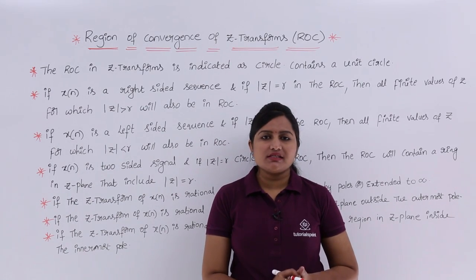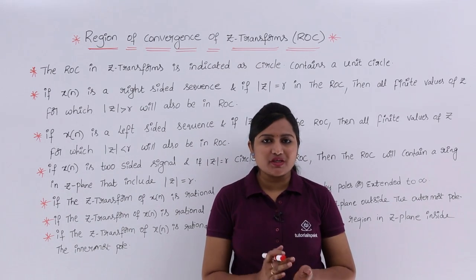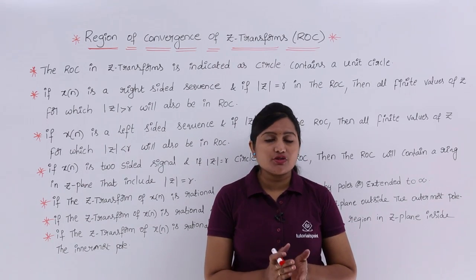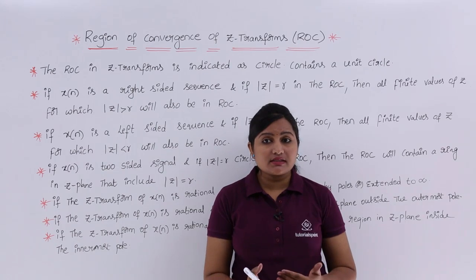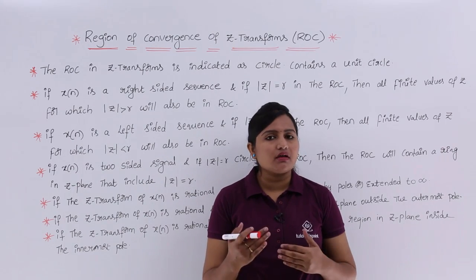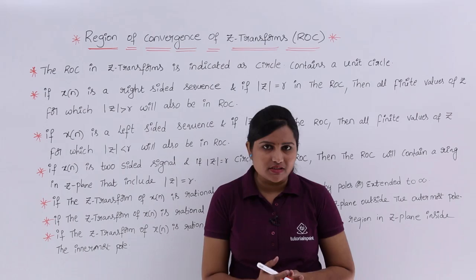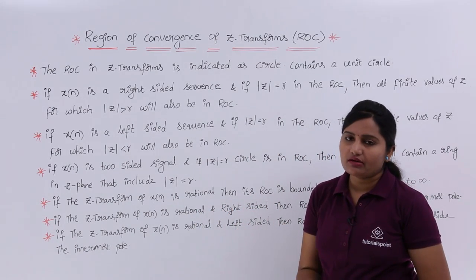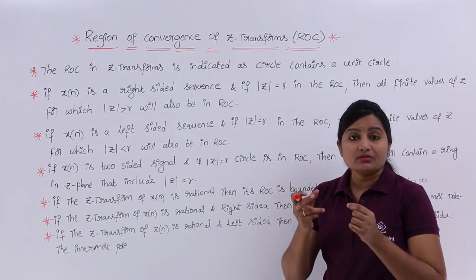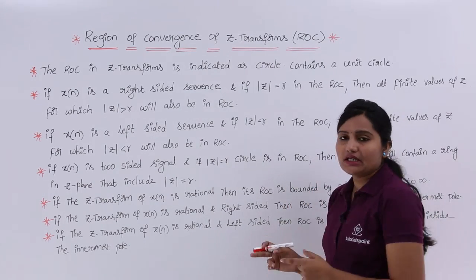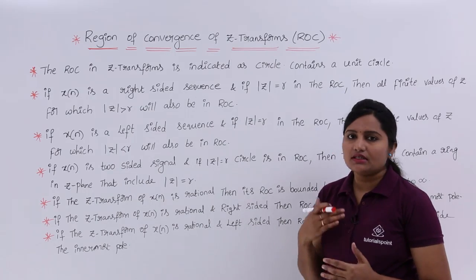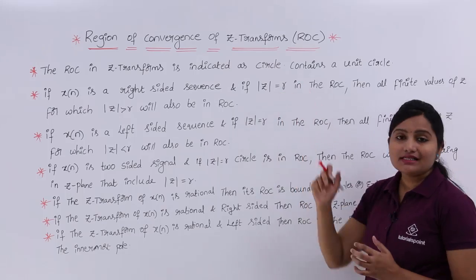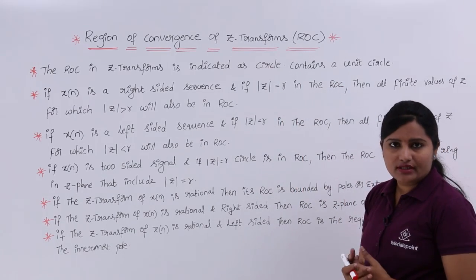In this video we are going to discuss region of convergence in Z transforms. We already discussed region of convergence related to Laplace transforms. In this class we are going to discuss region of convergence or ROC related to Z transforms. In Laplace it contains some strip lines, whereas in Z transforms the ROC contains some circles. Here the ROC in Z transforms is indicated as a circle and it includes a unit circle.